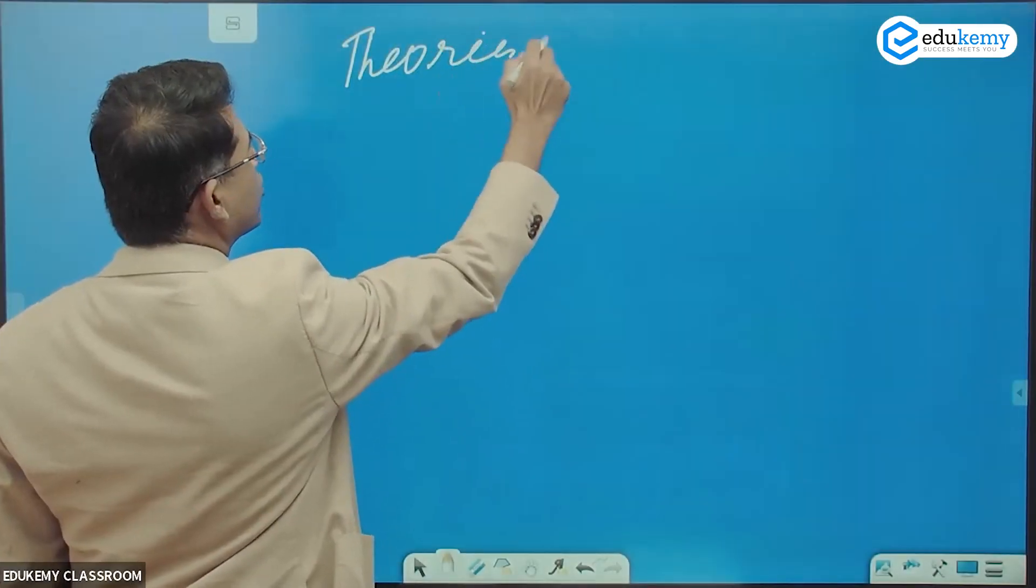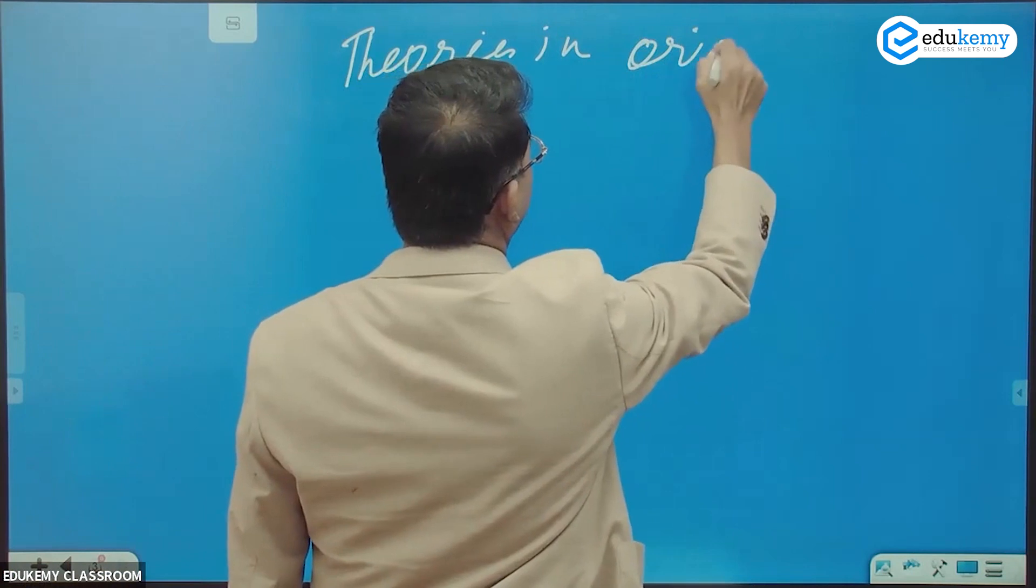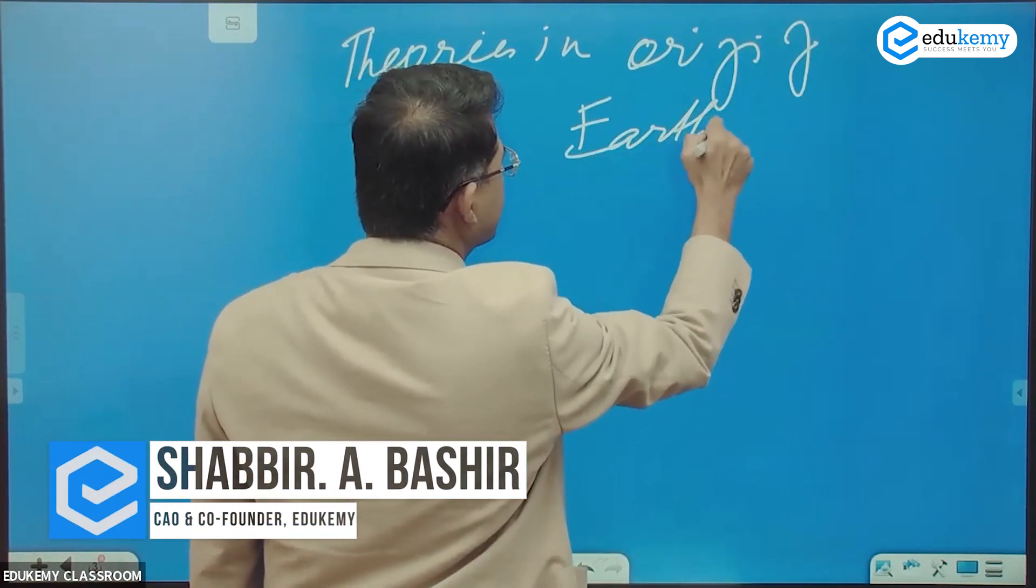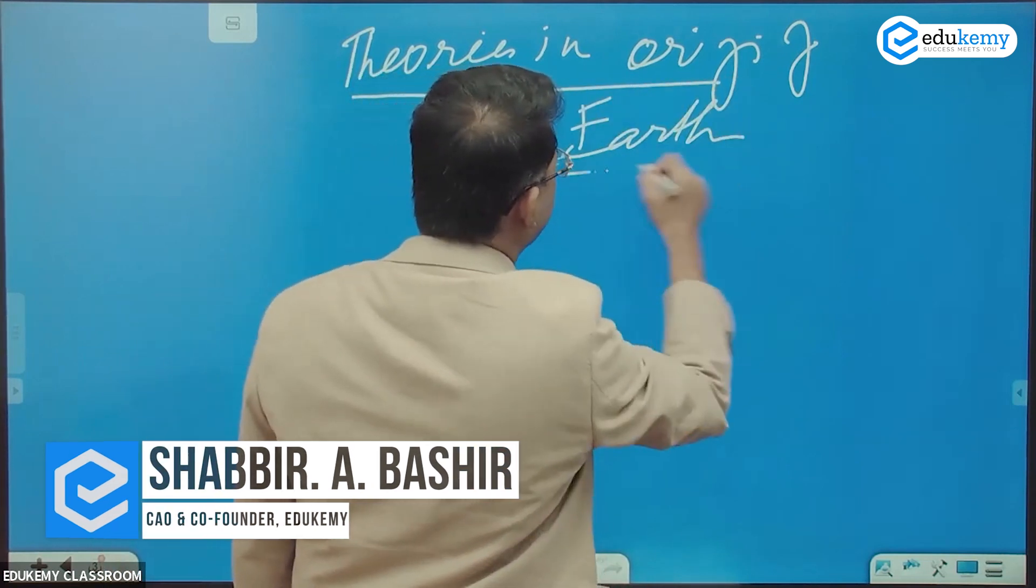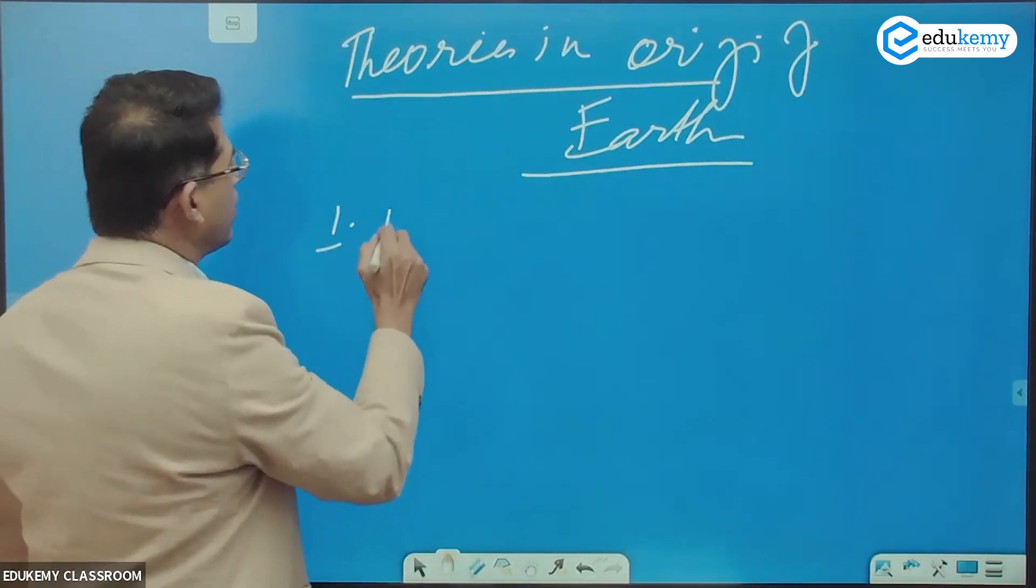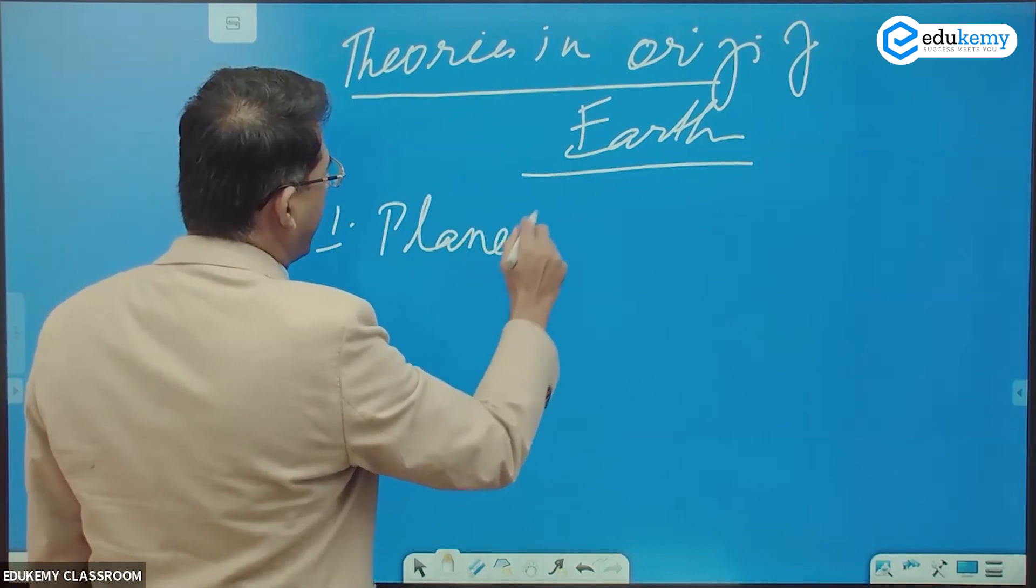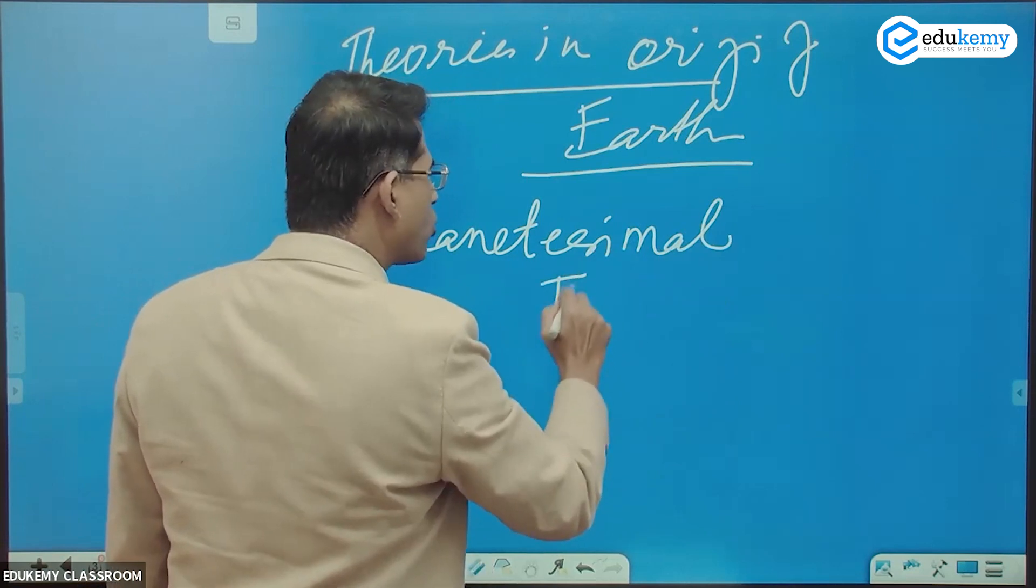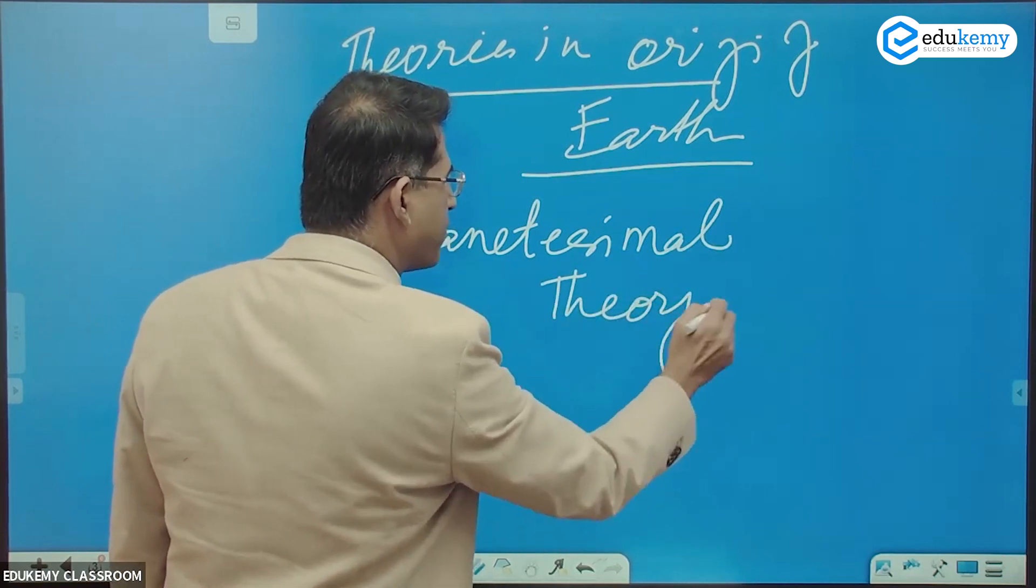What are the theories in the origin of Earth? We do not need any details, we just need to know some names. Theories in the origin of Earth: one is called the Planetesimal theory. Just know the names.